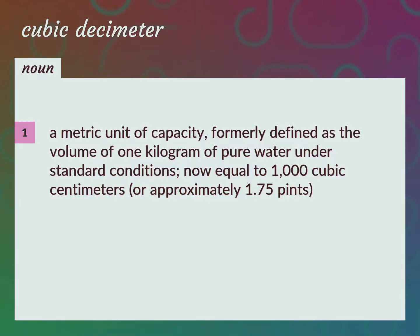A metric unit of capacity, formerly defined as the volume of 1 kg of pure water under standard conditions, now equal to 1,000 cubic centimeters, or approximately 1.75 pints.